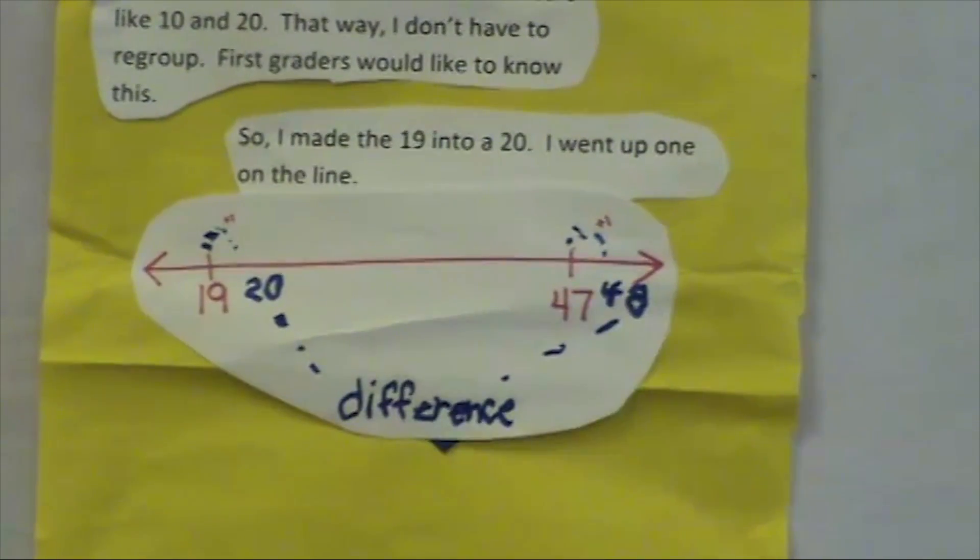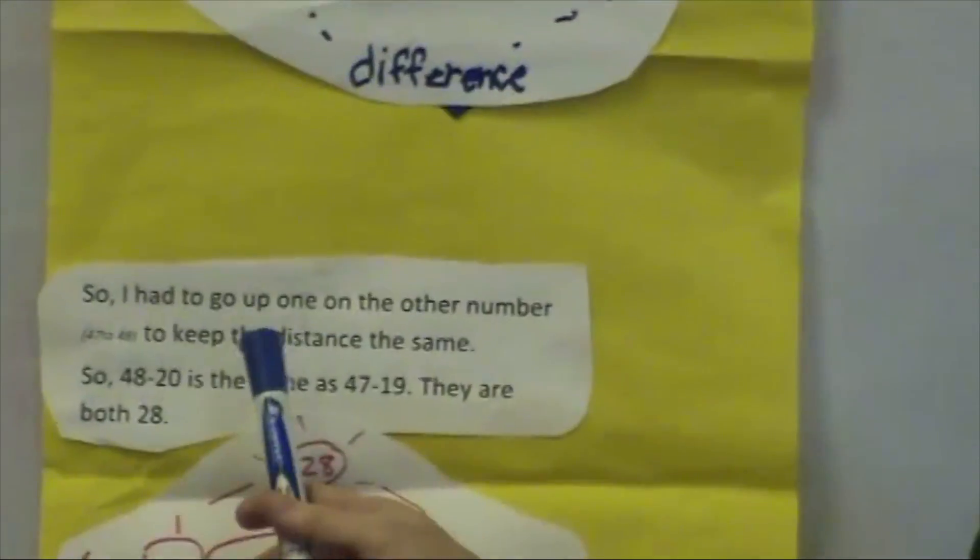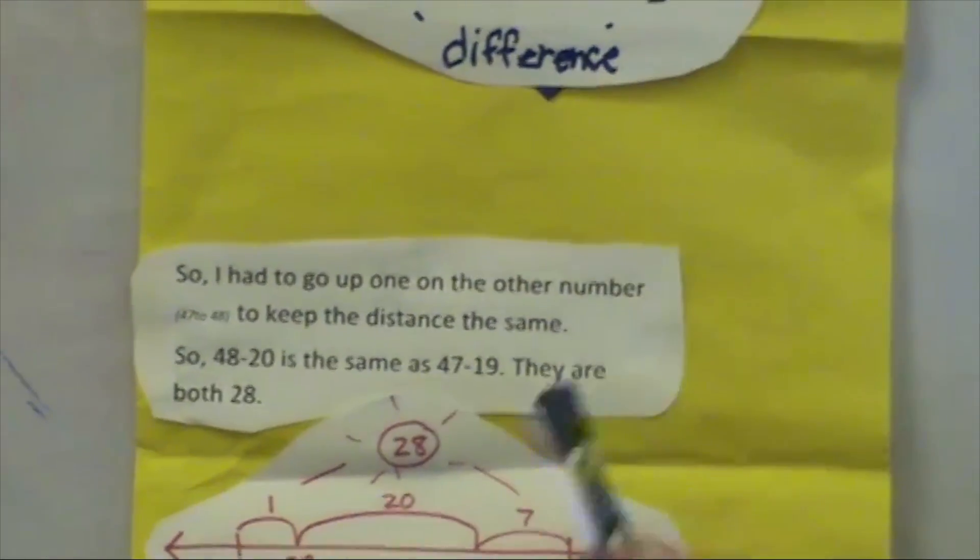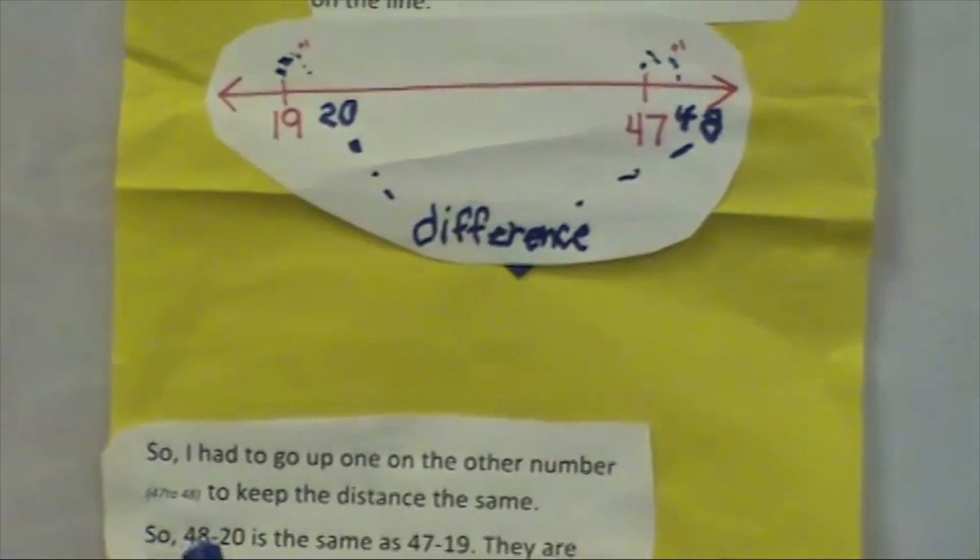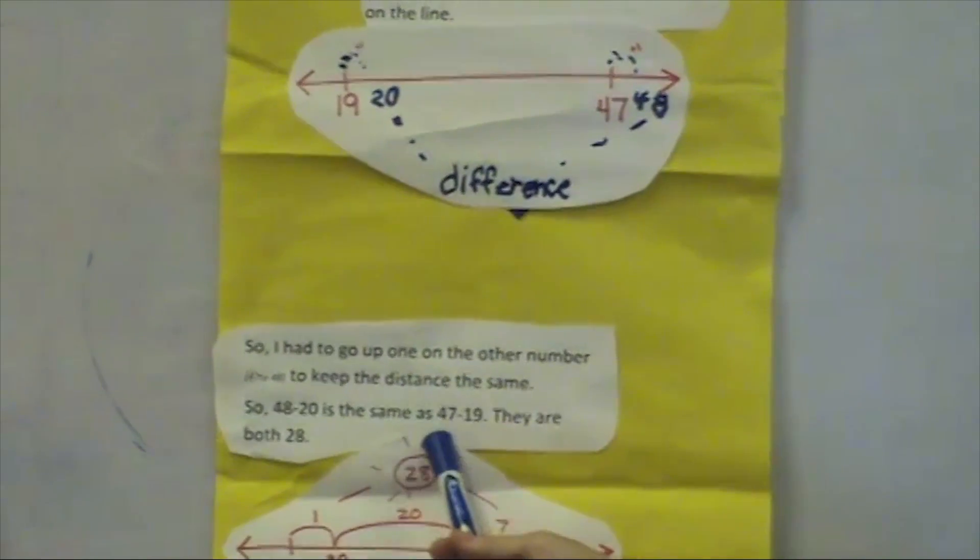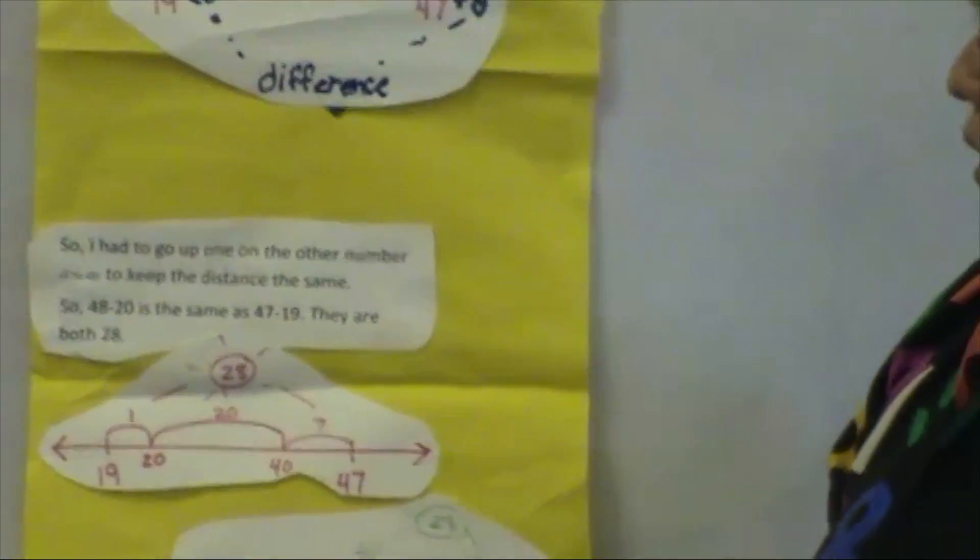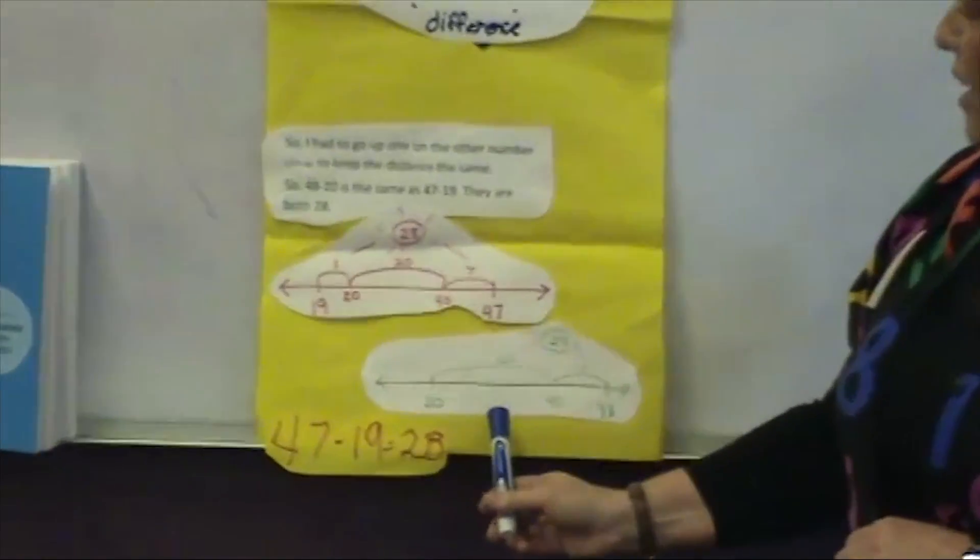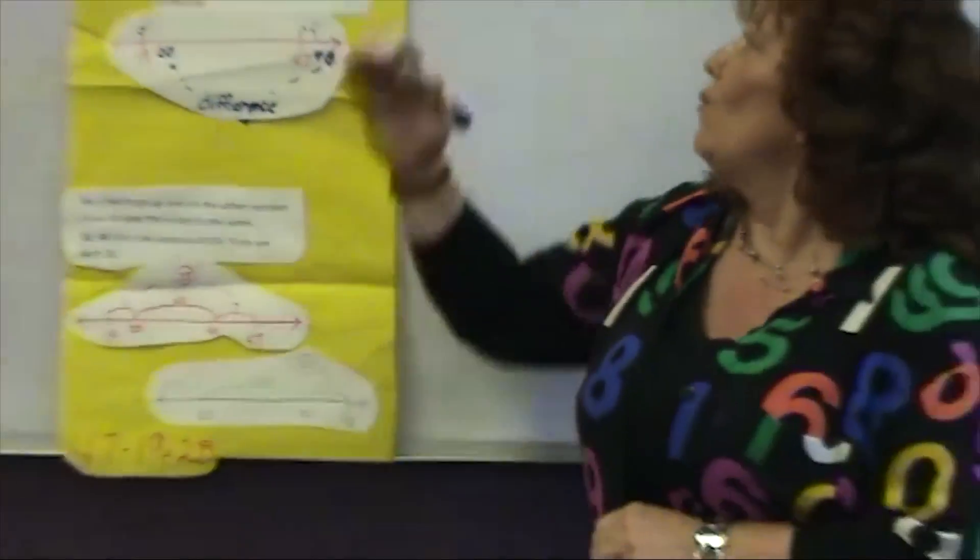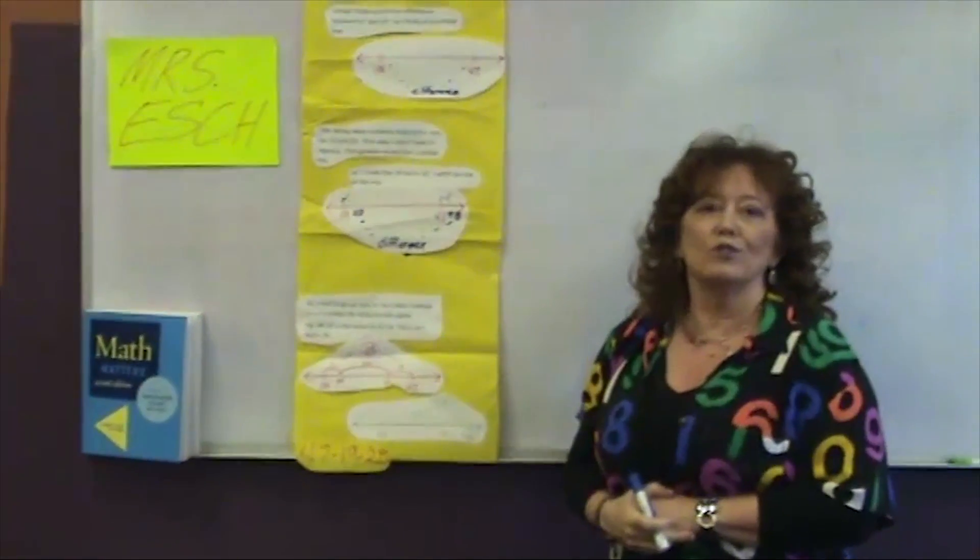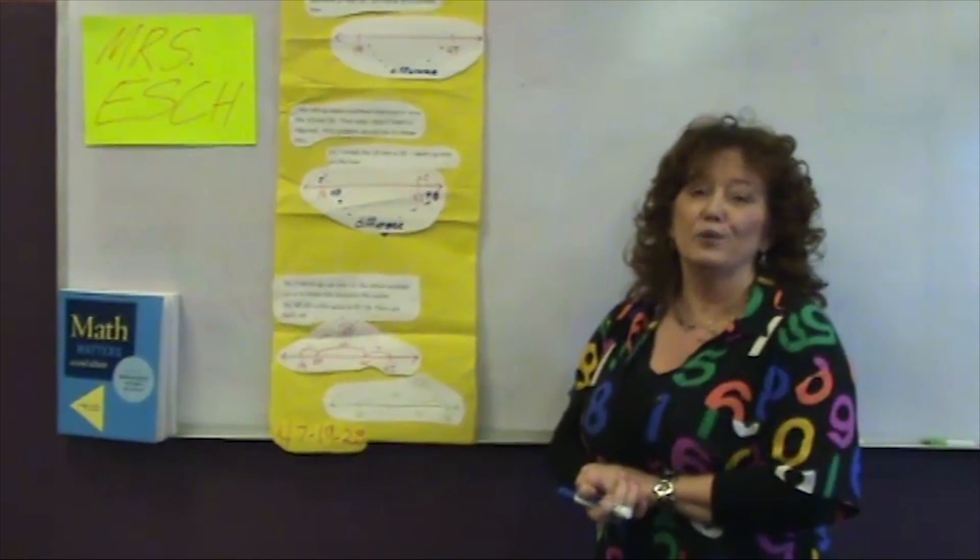First graders would like to know this. I thought it was interesting that they were concerned about other students. So, he says, I made the 19 into a 20, and I went up one up on the number line. And you can see his thinking how he went up one to 20, and then you can see added one, and he still knows that the difference remains the same. So, I had to go one up on the other number, which was 47 to 48, to keep the distance the same. So, 48 take away 20 is the same as 47 take away 19. They are both 28. And here is a recording of each one to show where the 28 came from. That way, as we continue to encounter this, we have some models in the room for students to look at. That's tip number three.